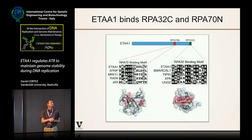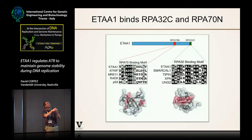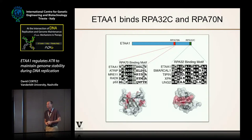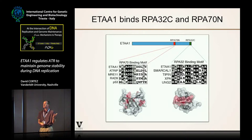NMR spectroscopy data shows that the ETAA1 peptide looks a lot like the SMARCAL1 peptide, TIPIN, XPA — all these proteins share a motif that binds in the same way to the RPA32C domain. There's a second motif in this protein that binds RPA as well — an RPA70N binding motif. The sequence of that motif in ETAA1 looks a lot like ATRIP, MRE11, RAD9, and p53, which all share a similar motif capable of binding the RPA70N domain.